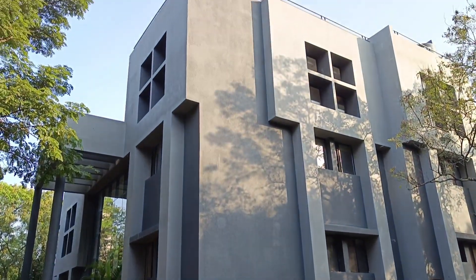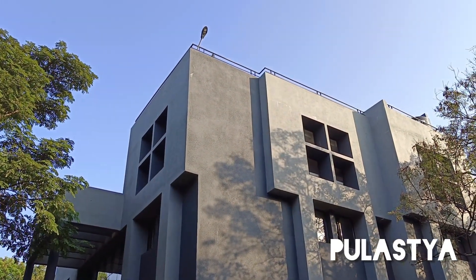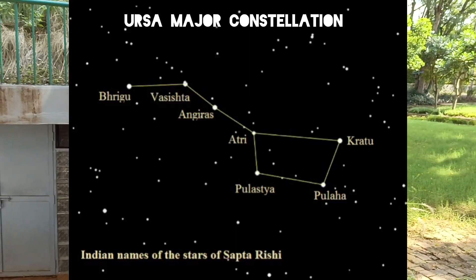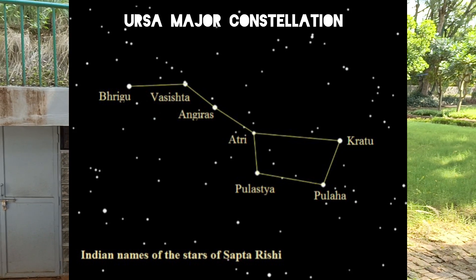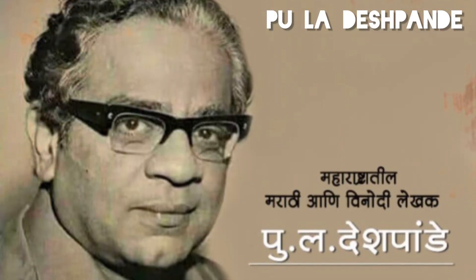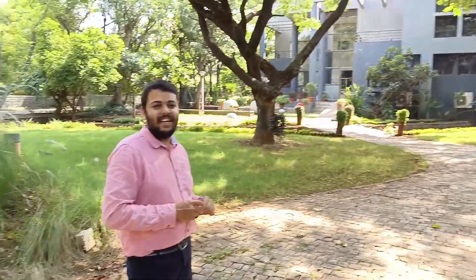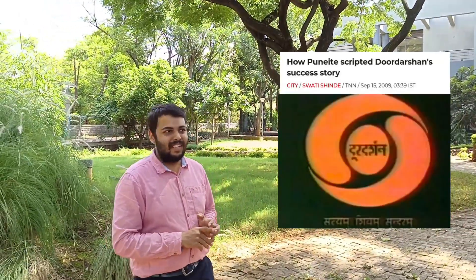The place where people stay is called Akashganga. This building is called Pulastya — this left-hand side building was the original one. It was named after a star in the Saptarushi constellation called Pulastya. There are seven rishis in Saptarushi: Kratu, Pulha, Pulastya, Atri, Angira, Vasishtha, and Marichi. Pulastya was chosen because the building was set up with a donation from Pu La Deshpande, a famous literary figure and humorist of Maharashtra who started stand-up comedy in India.